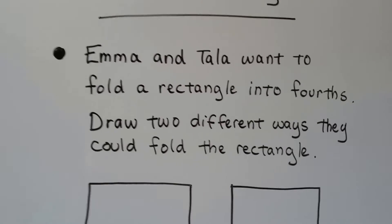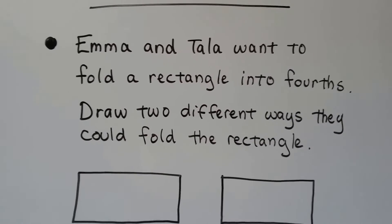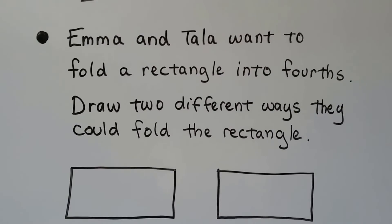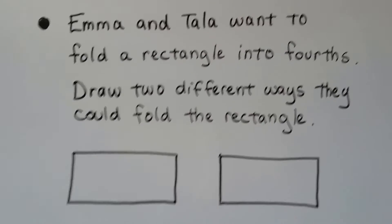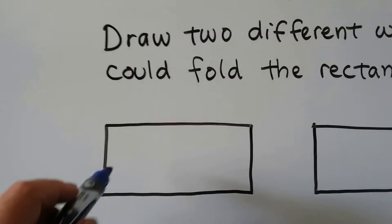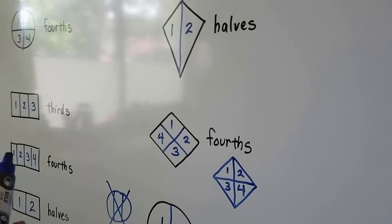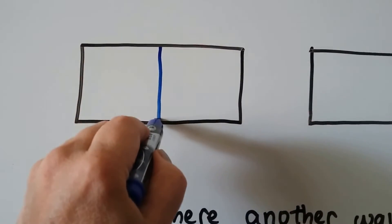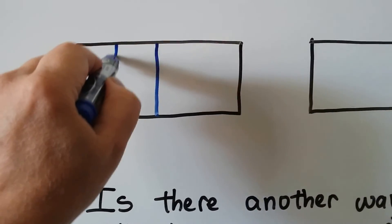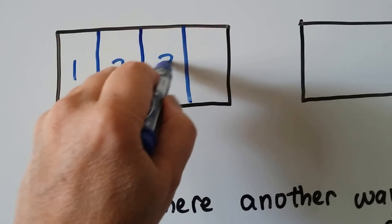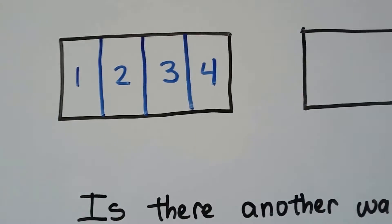Let's try some problem solving. Emma and Tala want to fold the rectangle into fourths — draw two different ways they could fold it. We need four equal parts. One way: cut it in half, then cut the half in half, giving us one, two, three, four equal parts.